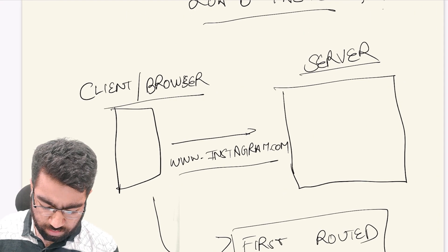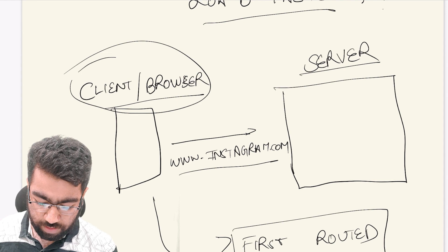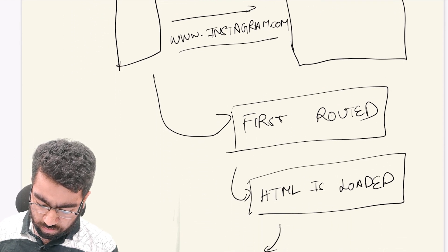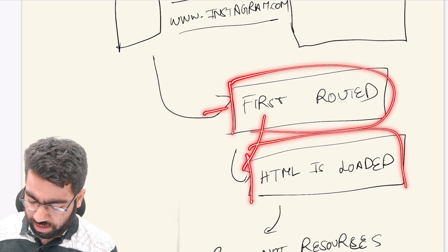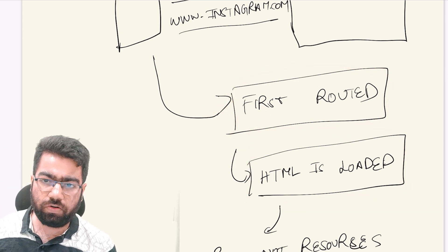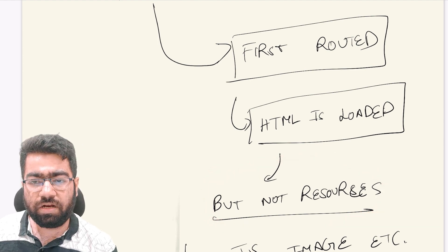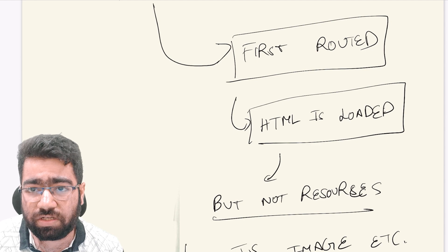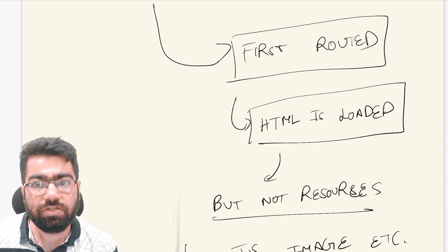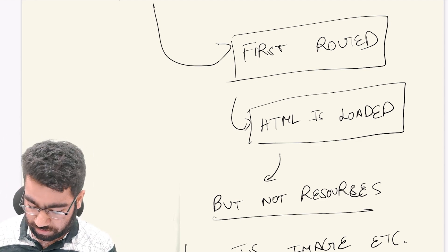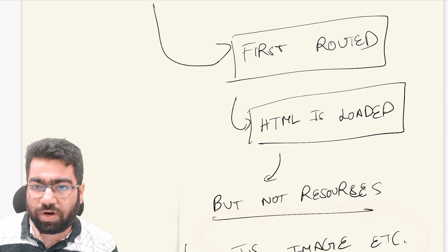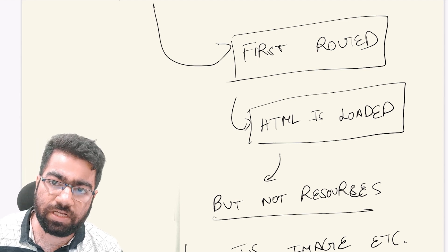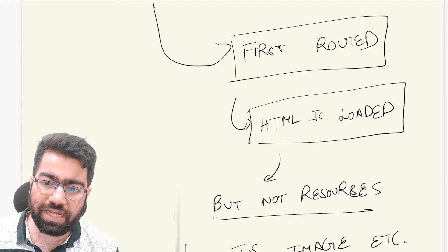This is your client — your client web app or browser — and from here you are making a call to the server at www.instagram.com. You are routed, and then an HTML is loaded. The HTML for instagram.com is loaded, but not the resources in it. For example, there are a lot of different resources used in loading a web page — there is JavaScript, there are various different images which you see on an Instagram feed — these are not loaded initially.